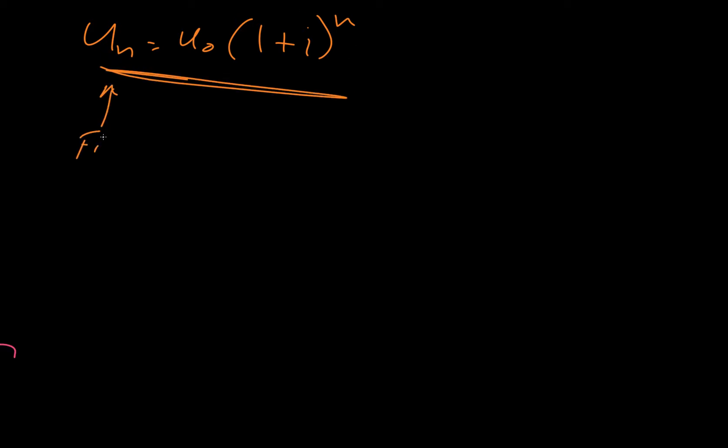This is your final amount. This is your initial amount that you invest. This together is like your interest. And then this is how often it's compounded per period. So compounding.